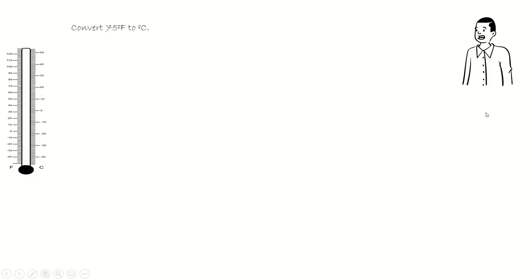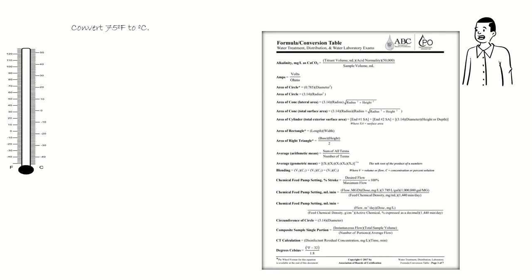Convert 75 degrees Fahrenheit to degrees Celsius. According to the ABC formula sheet, degrees Celsius is equal to degrees Fahrenheit minus 32, all divided by 1.8.